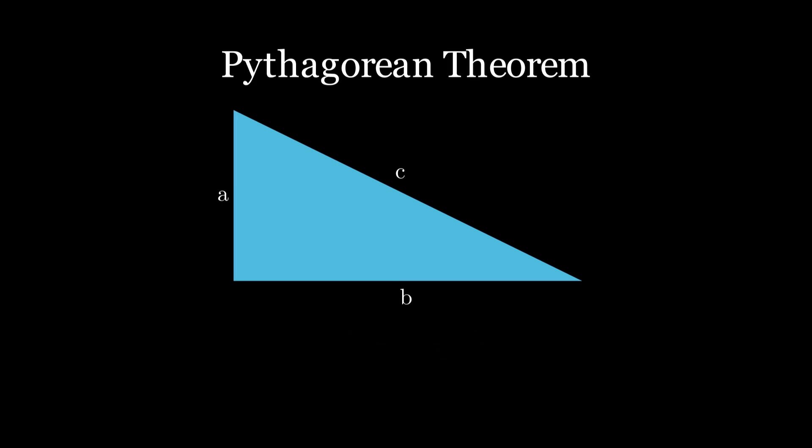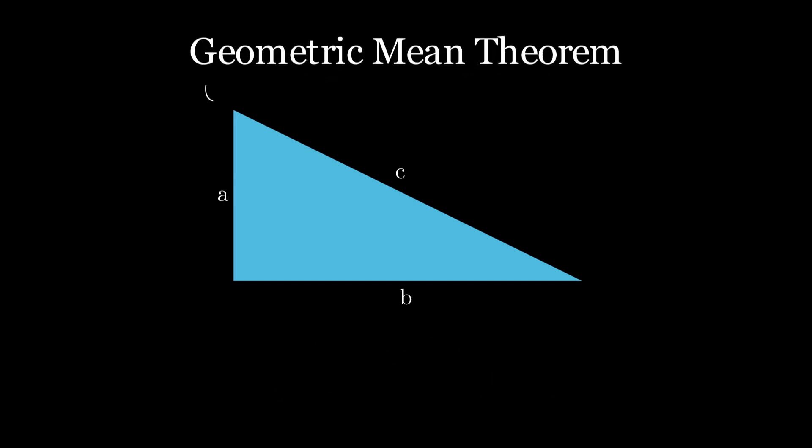However, did you know that the humble triangle is hiding another theorem? It's called the Geometric Mean Theorem, also known as the Right Triangle Altitude Theorem.